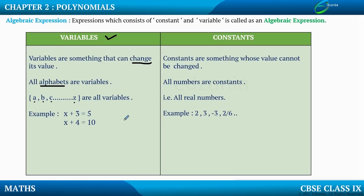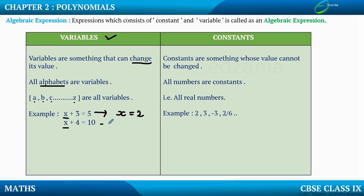I will give you a simple example of why all alphabets are variables. In the first example, x plus 3 is equal to 5. Can you guess the value of x? Which number plus 3 gives you 5? The answer is 2 — so x equals 2, because 2 plus 3 gives me 5. In the second example, x plus 4 is equal to 10. The value of x is 6, because 6 plus 4 gives me 10.